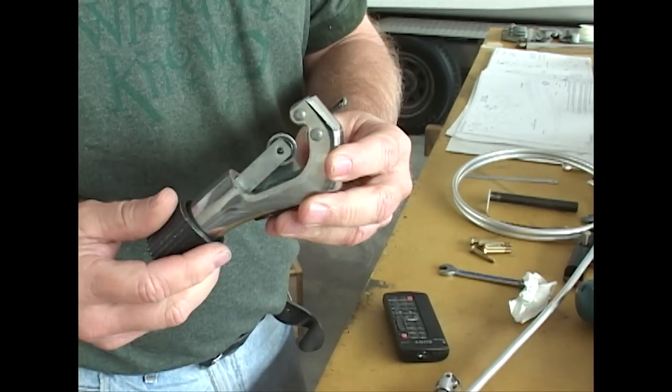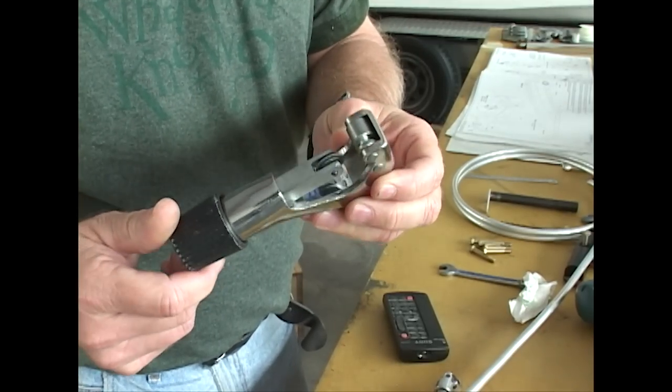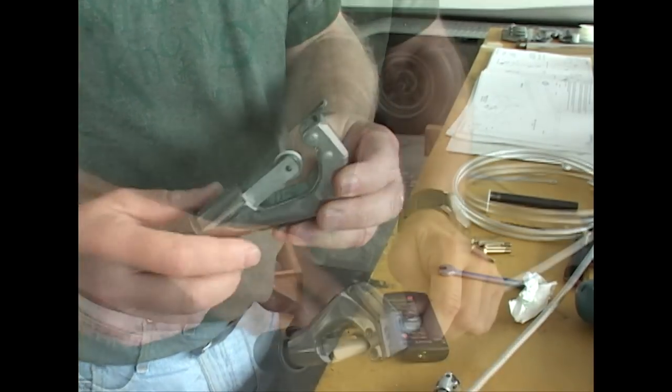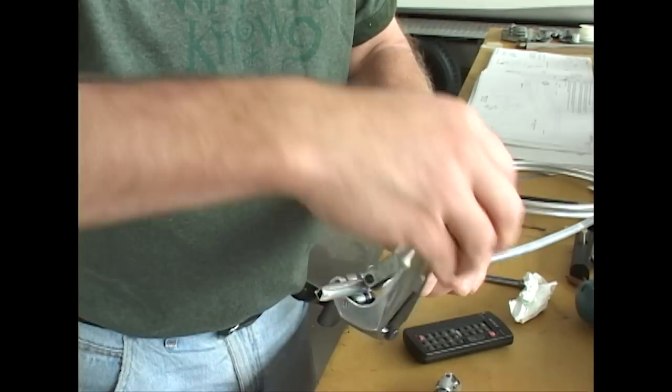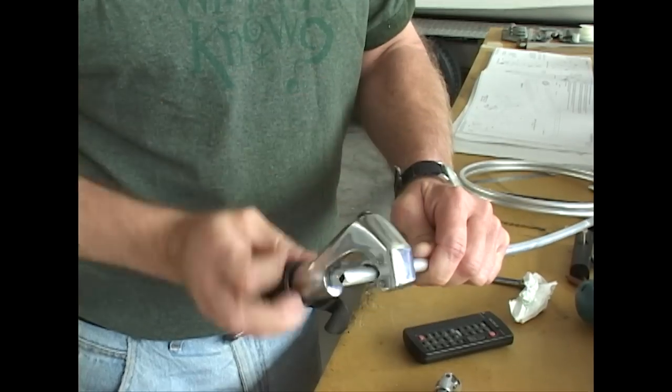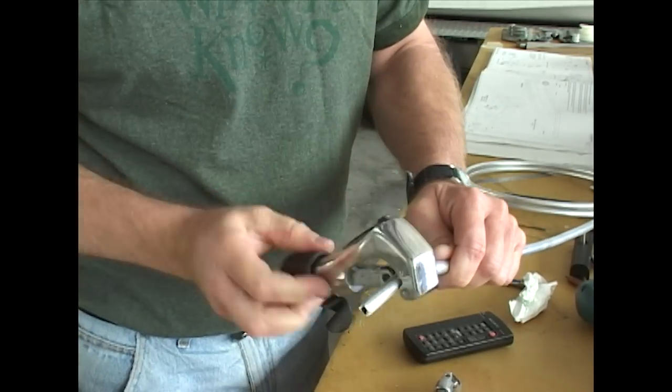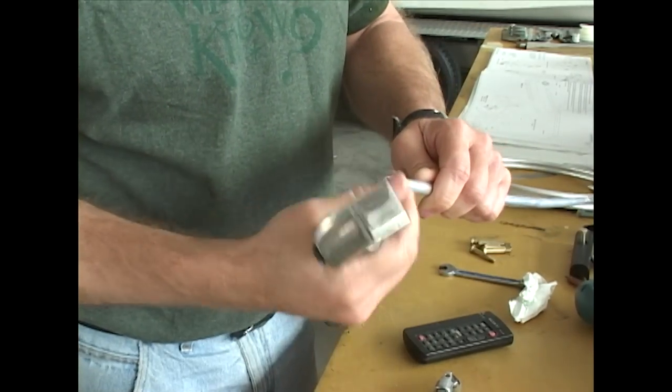The first step is to ensure that we have a clean cut, burr free, before we can flare. This is accomplished with a tubing cutter as shown here. The blade is tightened with a knob as we rotate the cutter around the tube.